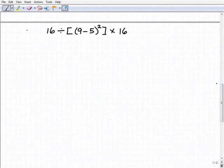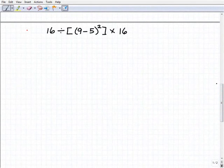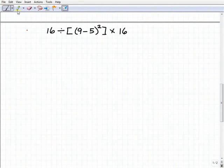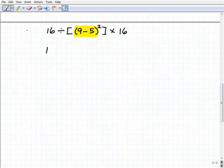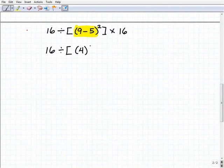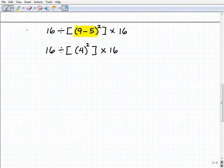Moving on to our last problem here. Remember PEMDAS, I want to do parentheses first. I have some inner parentheses and some outer parentheses, those brackets. Let's focus right here on those inner parentheses. So I'm going to go 16 ÷ [9-5]² × 16. So that'll be 16 ÷ [4]² × 16.